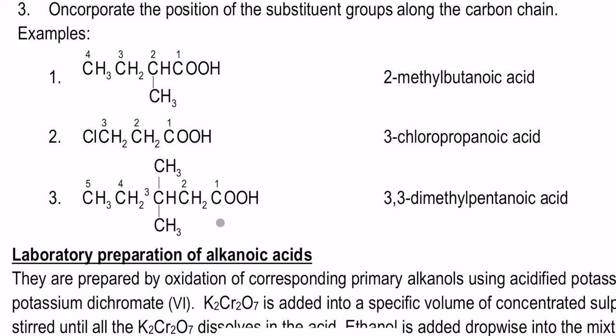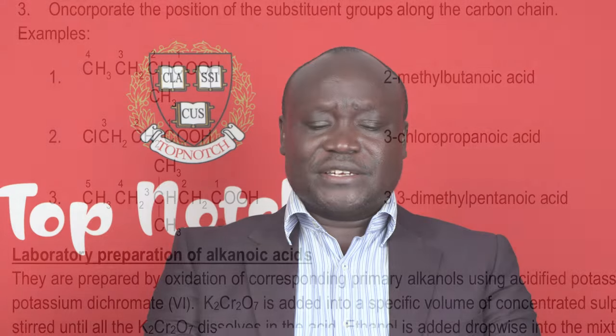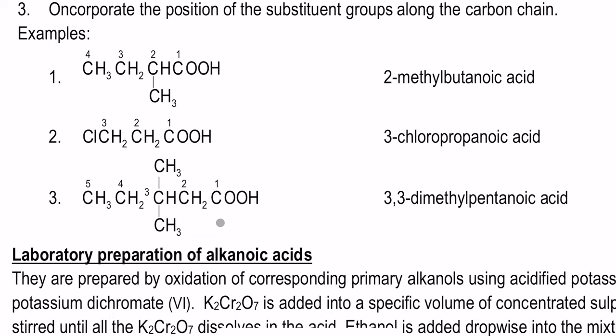There is also isomerism in alkanoic acids, but it is not very pronounced because we shall not be talking about a but-1-oic or a but-2-oic, since the functional group can only be on the first carbon. That is why we do not write a 1-oic or 2-oic or 3-oic — it simply remains as is.